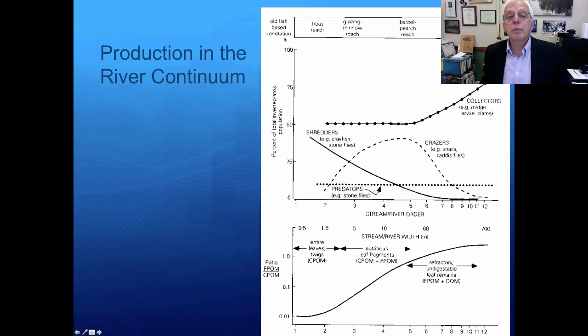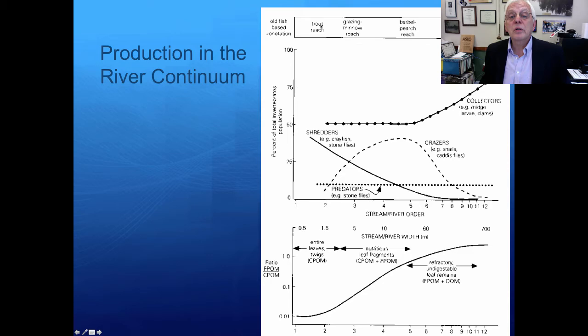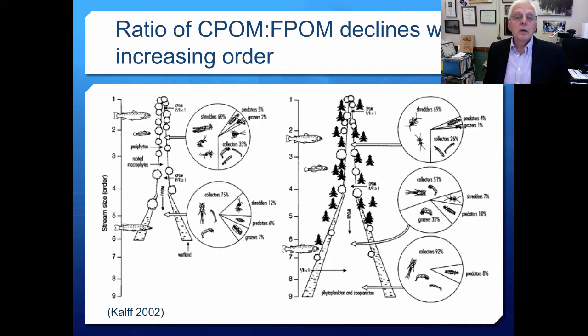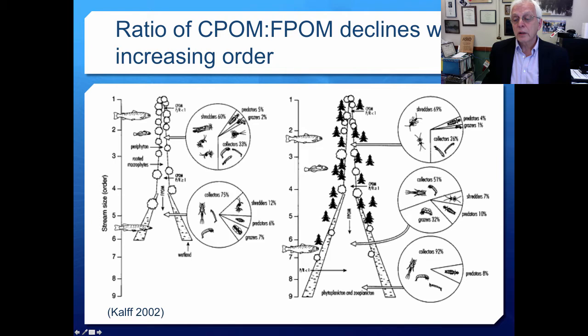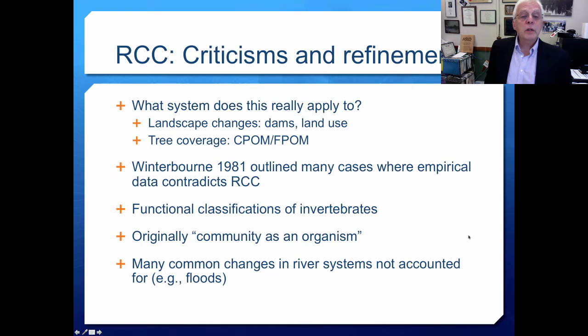There is an old fish-based zonation scheme where trout occur upstream, replaced downstream by carp and bream, with perches in the middle. This is another view of the same concept from the older KALF text, first order to ninth order stream. Shredders change to collectors, with intermediate grazers coming into substantial abundance in the mid-reaches of the stream.